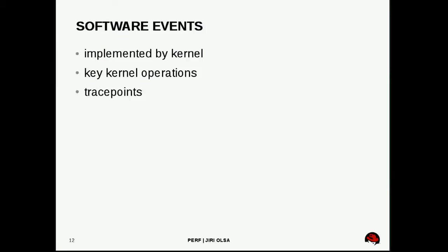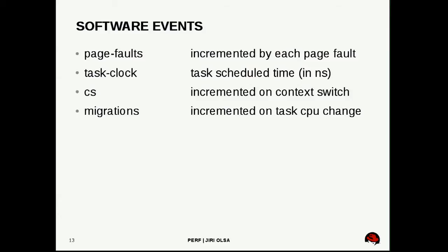Software events are purely implemented by the kernel. They cover very key kernel operations. So far there are four: page fault gives you the number of page faults during measurement; task clock gives you the time the task is scheduled on the CPU; context switch gives you the number of context switches; and task migration gives you the number of task migrations.